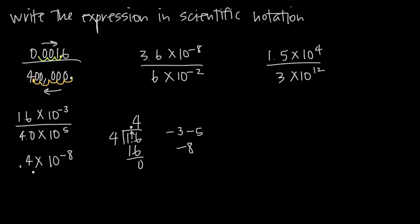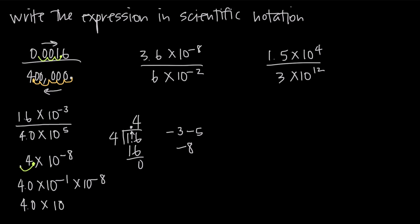But this is not in scientific notation. We always need to start with a whole number, so we move the decimal place one spot to the right to get 4.0. Because we moved it one spot to the right, we multiply by 10 to the negative 1. So we have 4.0 times 10 to the negative 1 times 10 to the negative 8. Adding those exponents: negative 1 plus negative 8 is negative 9. Our answer in scientific notation is 4.0 times 10 to the negative 9.